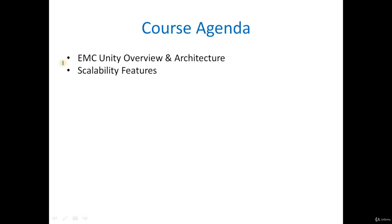Then we will be looking at the efficiency features. When we talk about efficiency features, we are referring to things like deduplication and compression — features that optimize our storage. We will discuss what new offerings are being included in Unity.